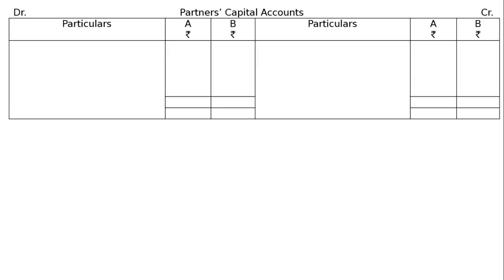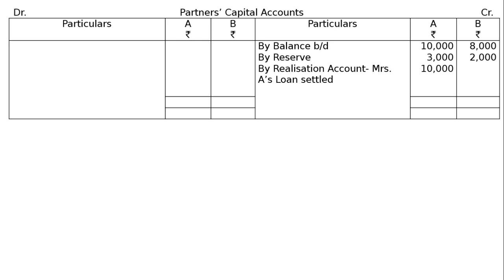Next, the Partners Capital Accounts for A and B. By Balance brought down: A Rs.10,000, B Rs.8,000. By Reserve in old ratio of 3 to 2: Rs.3,000 for A, Rs.2,000 for B — total Rs.5,000. By Realization Account, Mrs. A's Loan settled at Rs.10,000. On the debit side: Realization Account Loss — Rs.3,960 for A and Rs.2,640 for B.